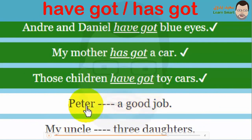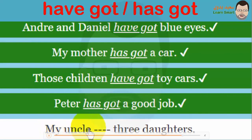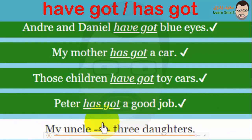Let's try more. 'Peter, a good job' — Peter is one person, so 'Peter has got a good job'. 'My uncle, three daughters' — don't look at the three daughters; just look at the subject. My uncle is one, so 'my uncle has got three daughters'. The subject determines whether to use 'has got' or 'have got'.